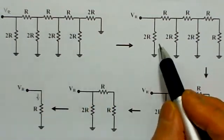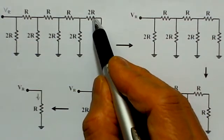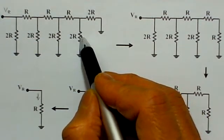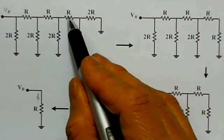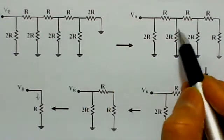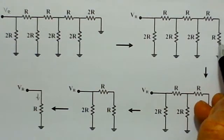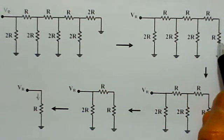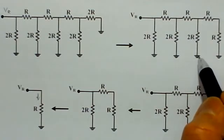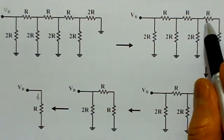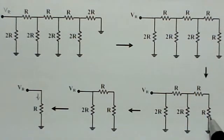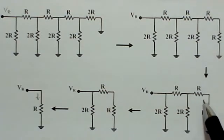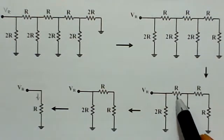This network can be simplified step by step. Two R in parallel with two R gives R, and that R in series with R gives two R. Next, R in series with R makes two R, and two R in parallel with two R gives R again. Continuing, R plus R gives two R, and two R in parallel with two R again gives R.